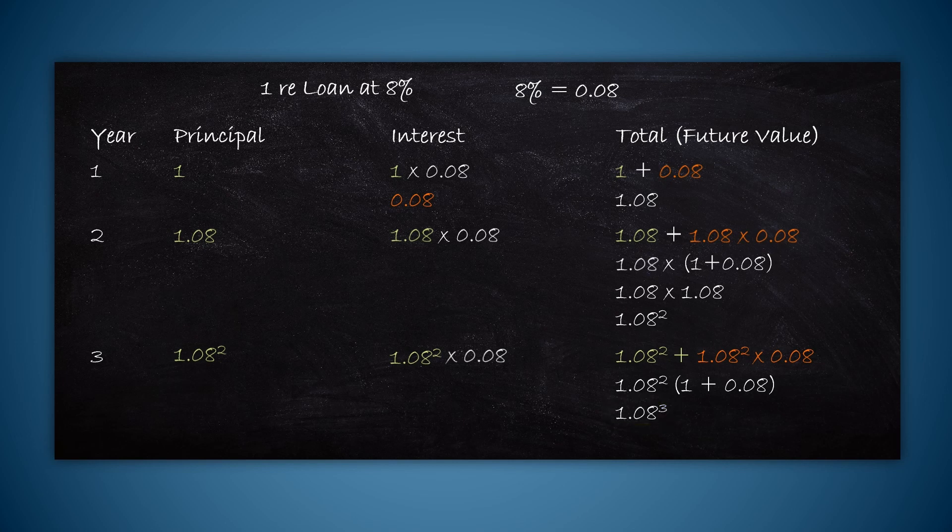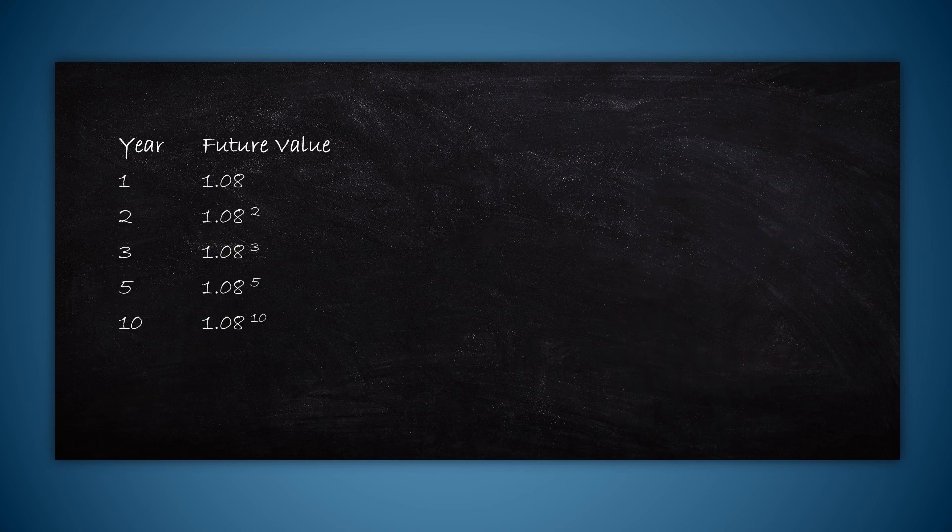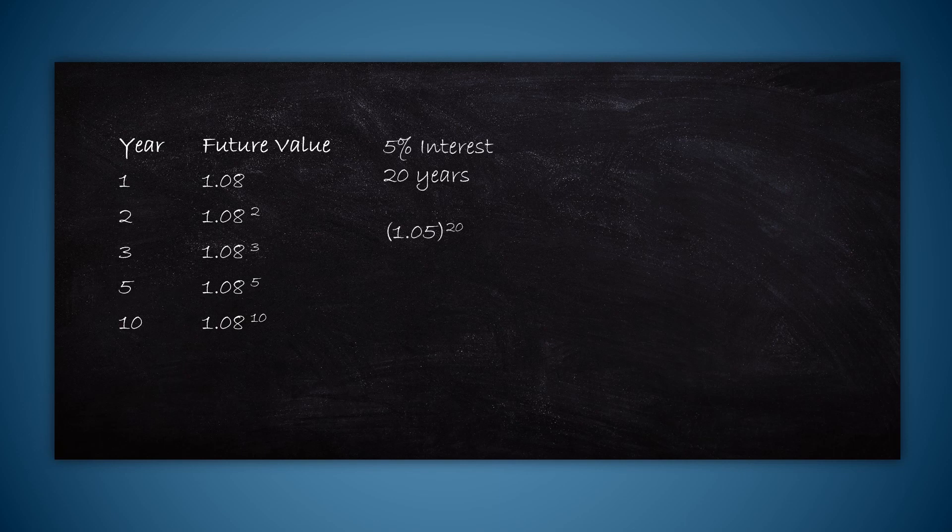So you see a clear pattern is emerging. If you want future value for one year, it is 1.08. For two years it is 1.08 square. For three years it is 1.08 cube. So if you want it for five years, it is 1.08 to the power 5, and 10 years will be 1.08 to the power 10. If you want future value for 5 percent interest and 20 years, it will be 1.05 to the power 20. 6 percent growth for 15 years: 1.06 to the power 15.